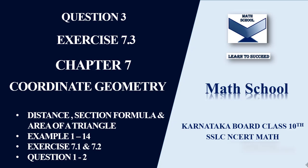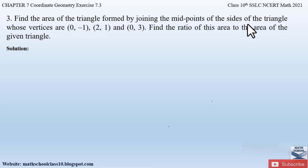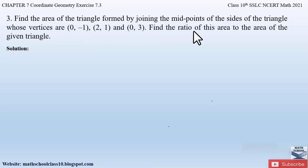Now let us begin with the video. Question number three from exercise 7.3, chapter 7 coordinate geometry says: find the area of the triangle formed by joining the mid points of the sides of the triangle whose vertices are (0, -1), (2, 1) and (0, 3). Find the ratio of this area to the area of the given triangle.